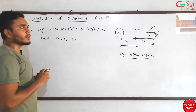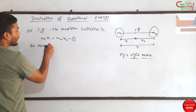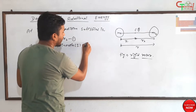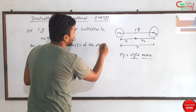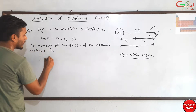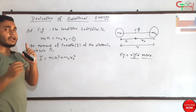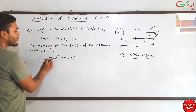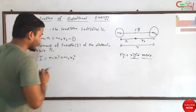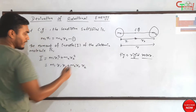Now we know that there will be a moment of inertia whenever we talk about a rotor. The moment of inertia, denoted by I, of the diatomic molecule is: I = m1·r1² + m2·r2². This is the value for the moment of inertia of the diatomic molecule. If it were monoatomic, it would only be I = m1·r1², but since it is diatomic we add both terms.